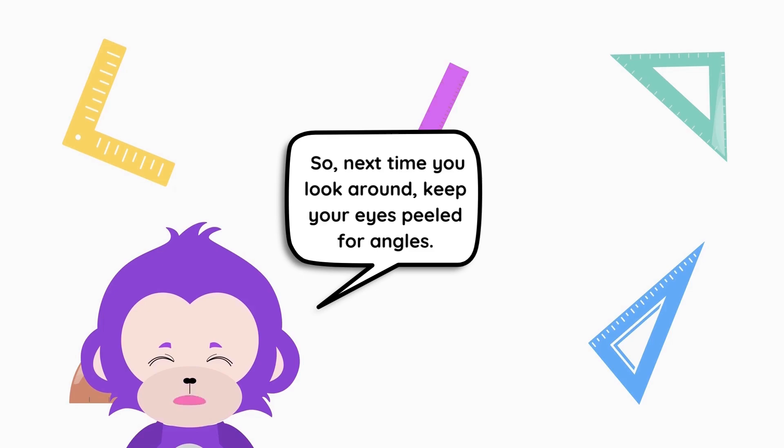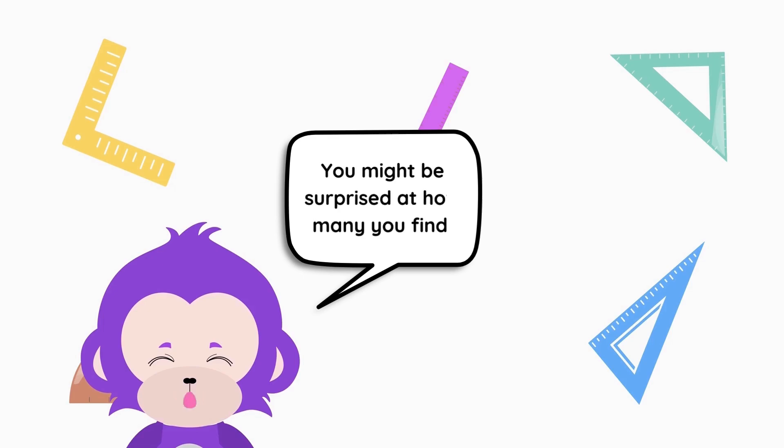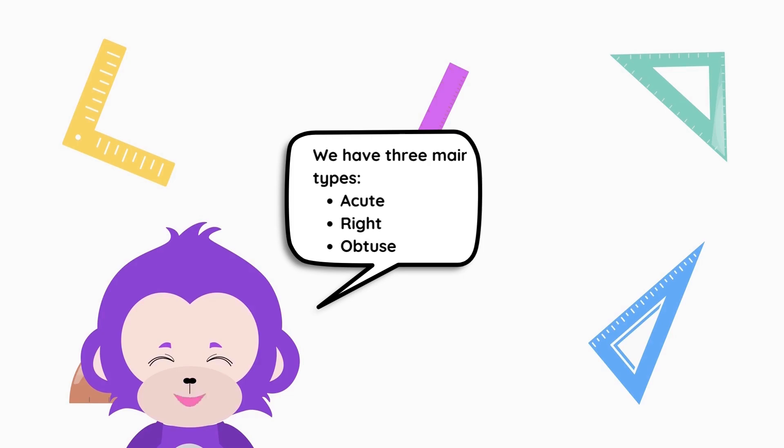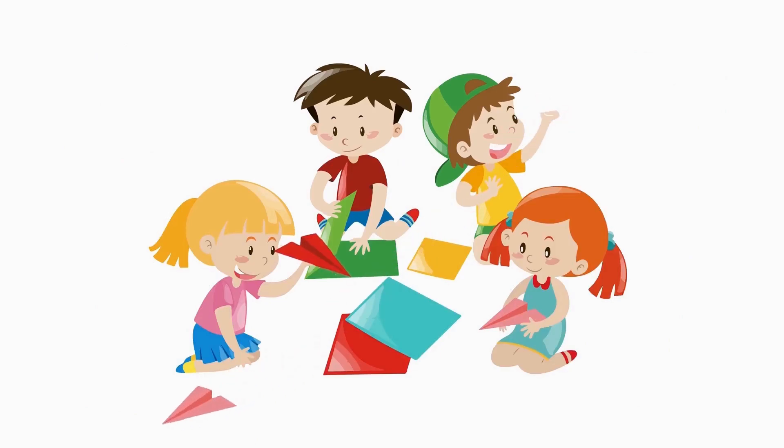So next time you look around, keep your eyes peeled for angles. You might be surprised at how many you find. All right little learners, let's recap. Angles are like the cool cousins of lines, making shapes dance and twist. We have three main types: acute, right, and obtuse, each with their own unique personality. Angles are everywhere, from your classroom to the playground.